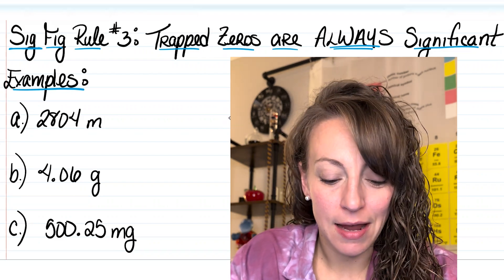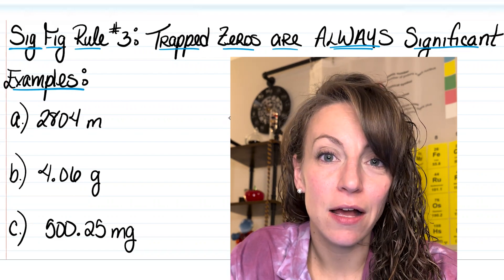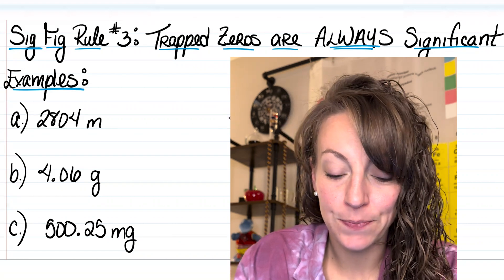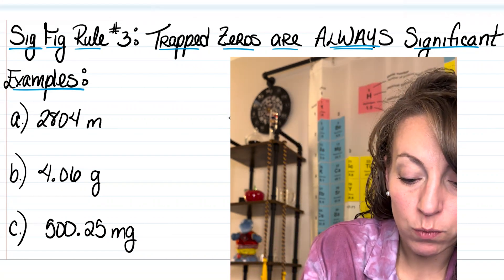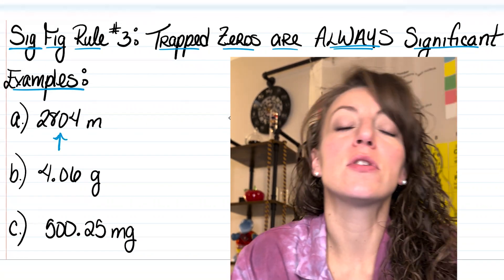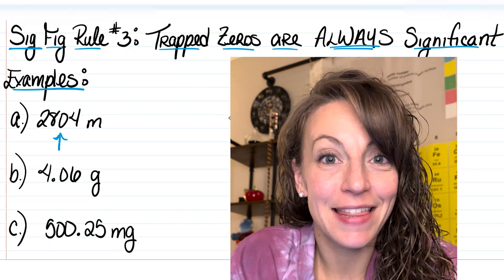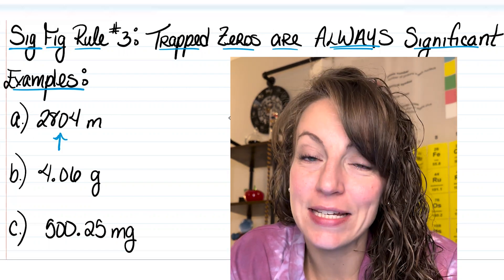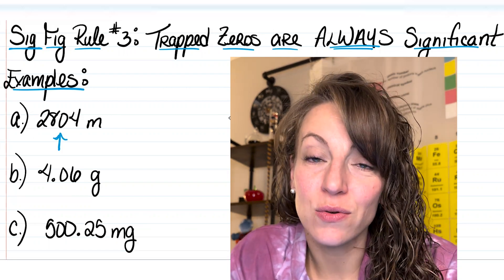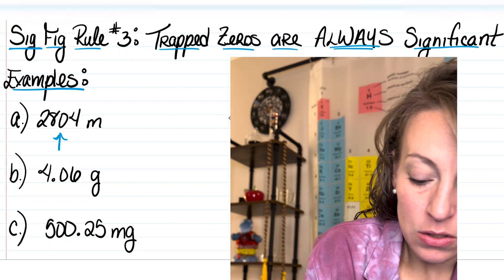For example, in letter A I've got two thousand eight hundred and four meters. We have one trapped zero right there between the eight and the four. That zero is going to count as well as those non-zero digits.